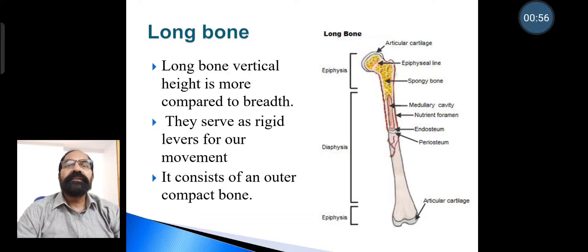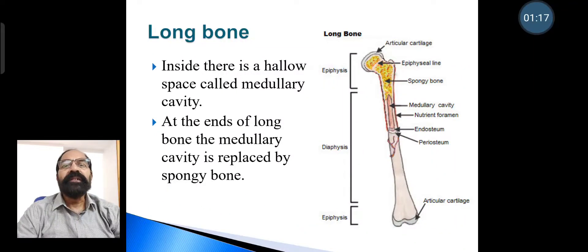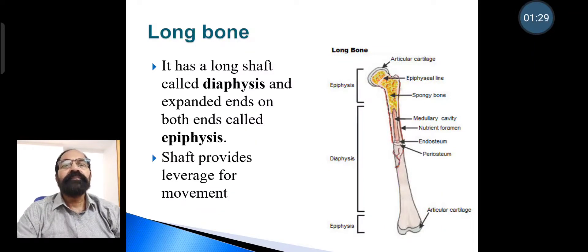Long bones serve as rigid levers of our movement. They consist of an outer compact bone, and inside there is a hollow space called the medullary cavity. At the ends of the long bone, the medullary cavity is replaced by spongy bone. The long bone has a shaft called the diaphysis and expanded ends on both sides called the epiphysis.